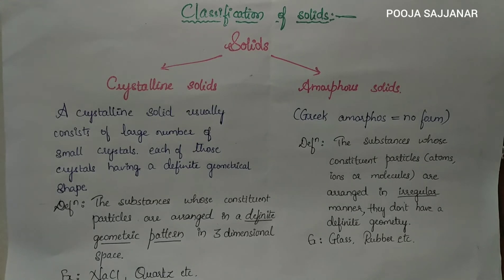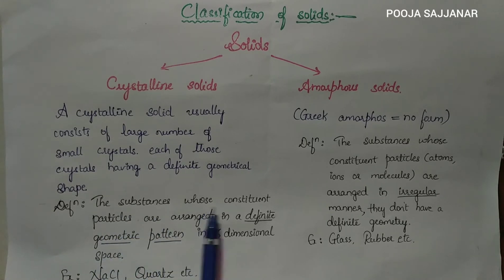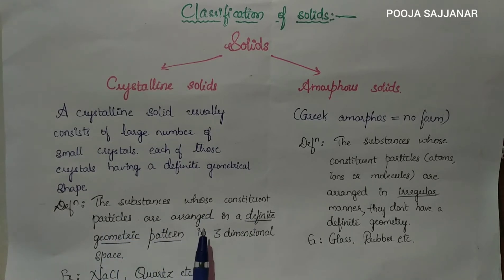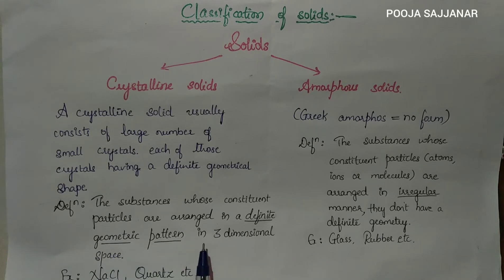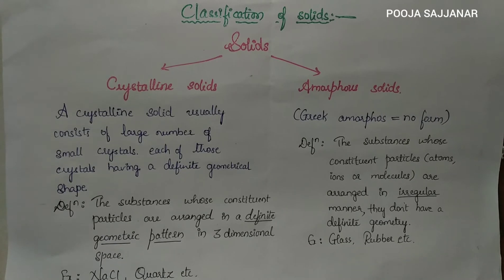Now we can define crystalline solids. The substances whose constituent particles are arranged in a definite geometric pattern in a three-dimensional space are called crystalline solids. For example, NaCl and quartz, etc.